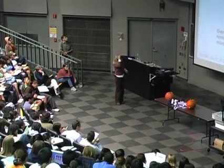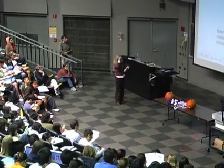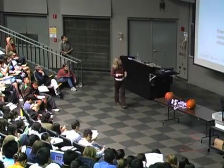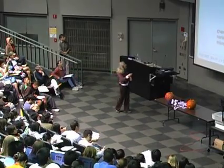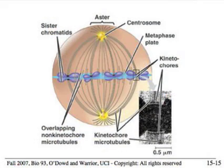Here is a higher resolution picture to show what's happening. Here we have in metaphase our sister chromatids, and remember we have kinetochore microtubules that are attached to the kinetochore region of the chromosomes. There are four or five microtubules shown here attached to this side, and there are others attached to the other side, which is illustrated in the EM where you can see what these structures really look like.